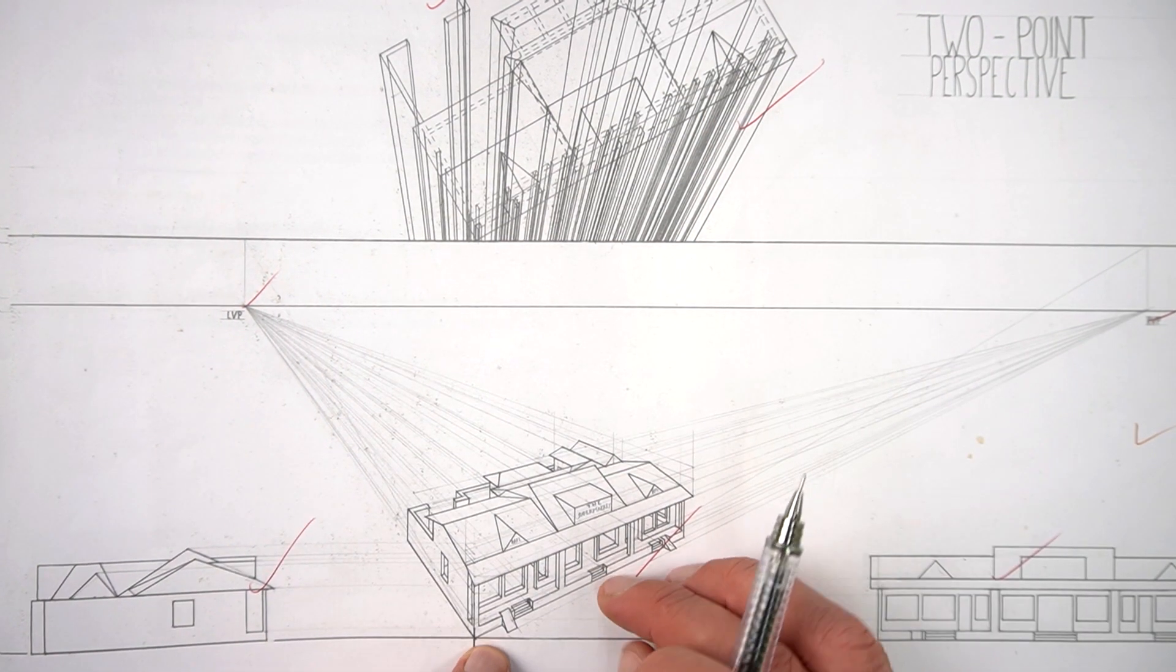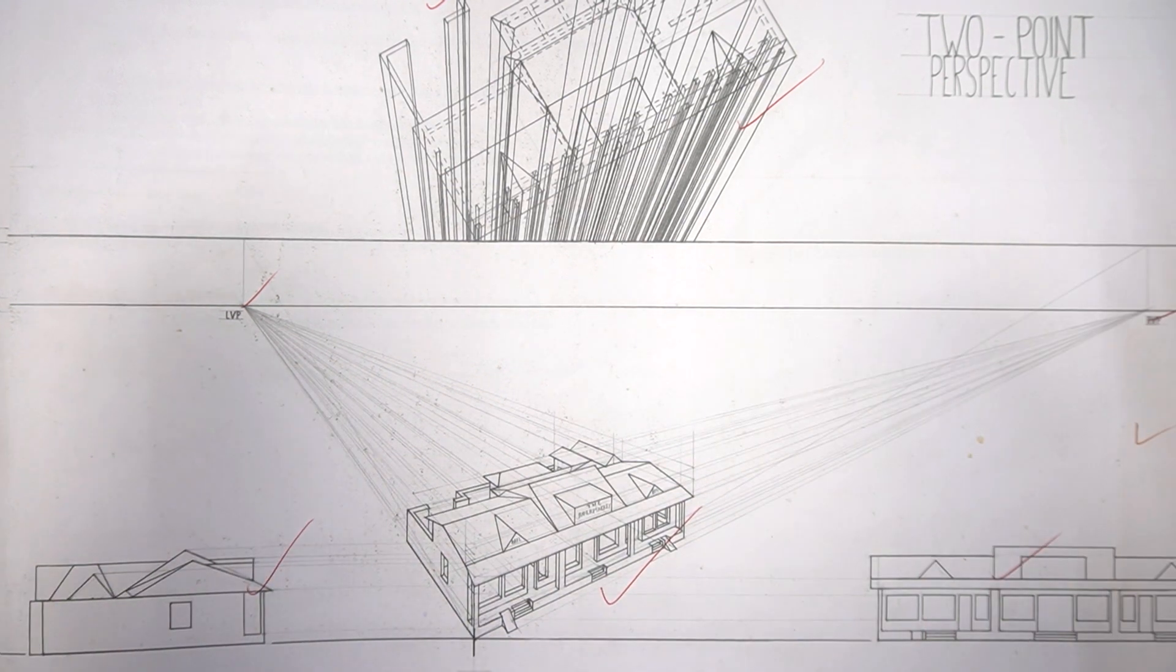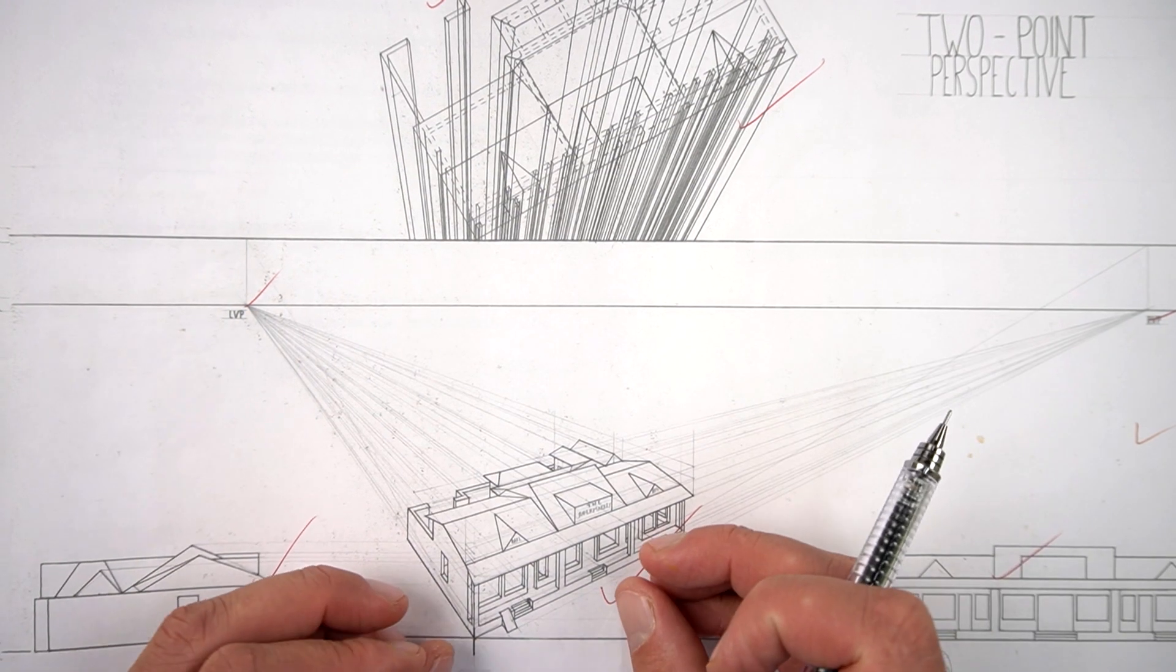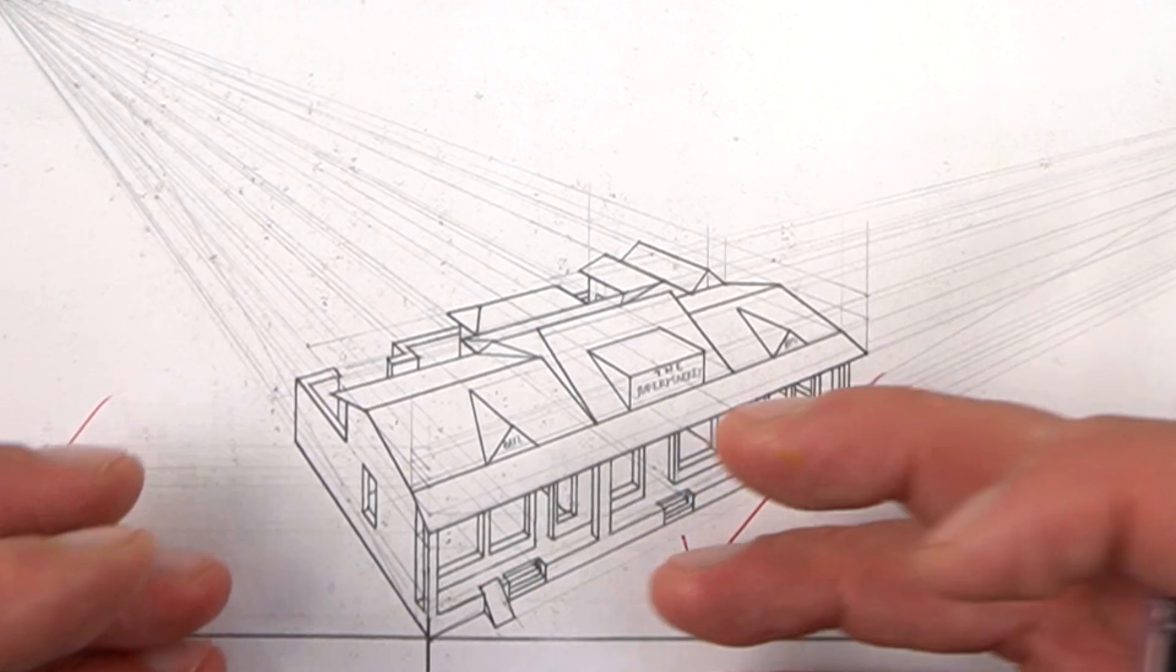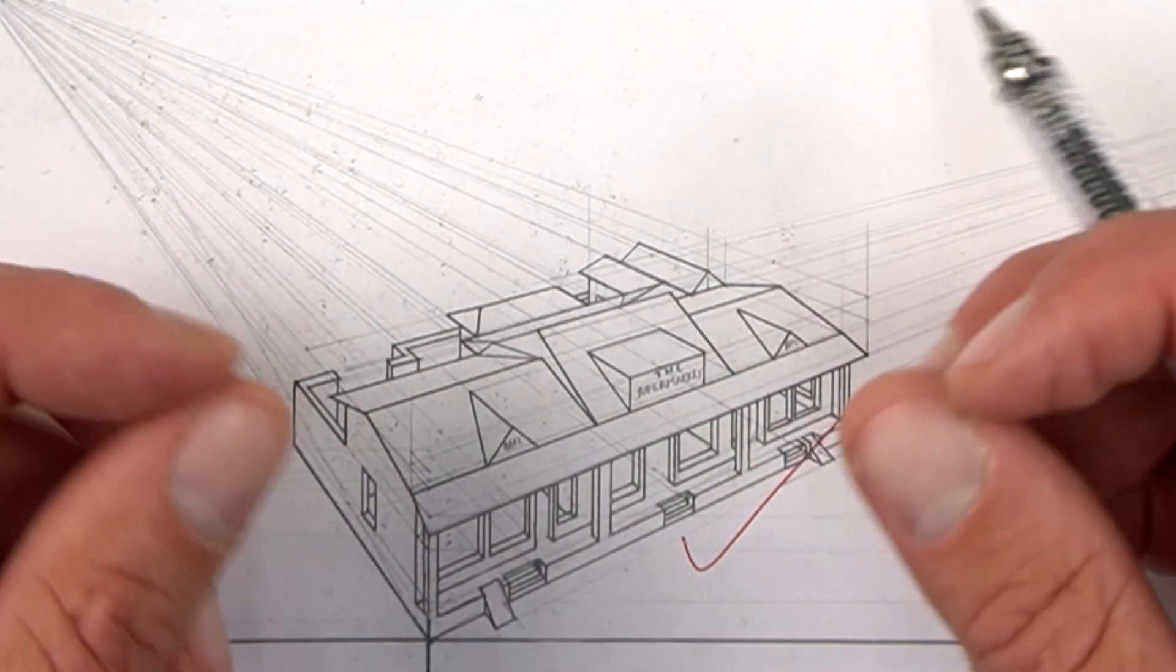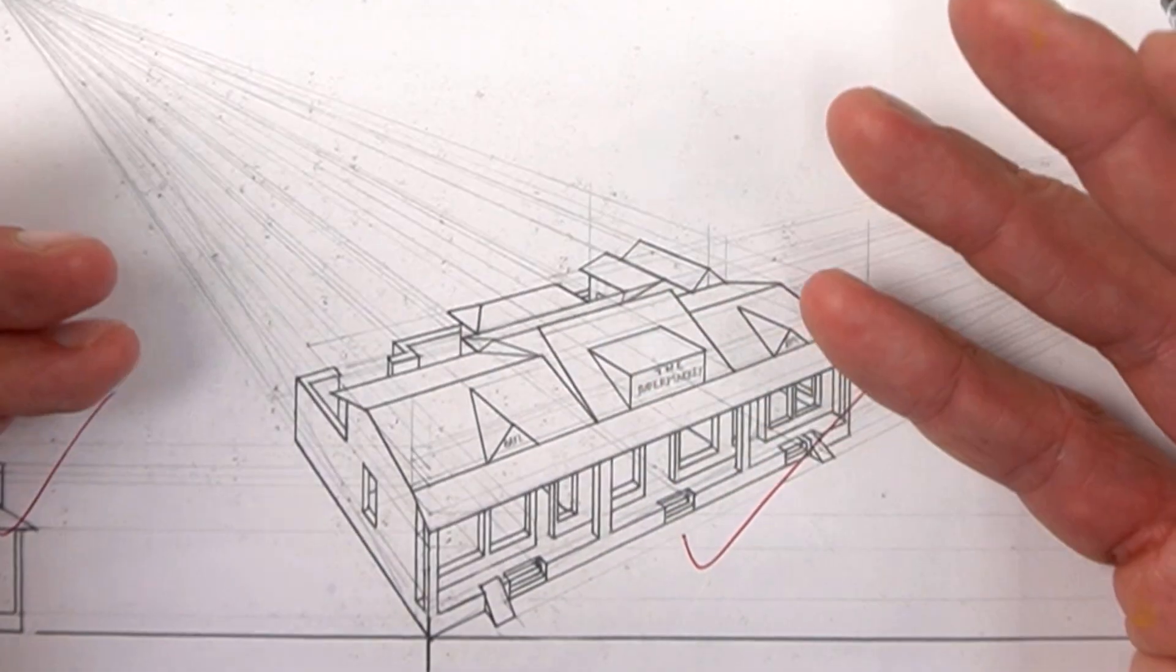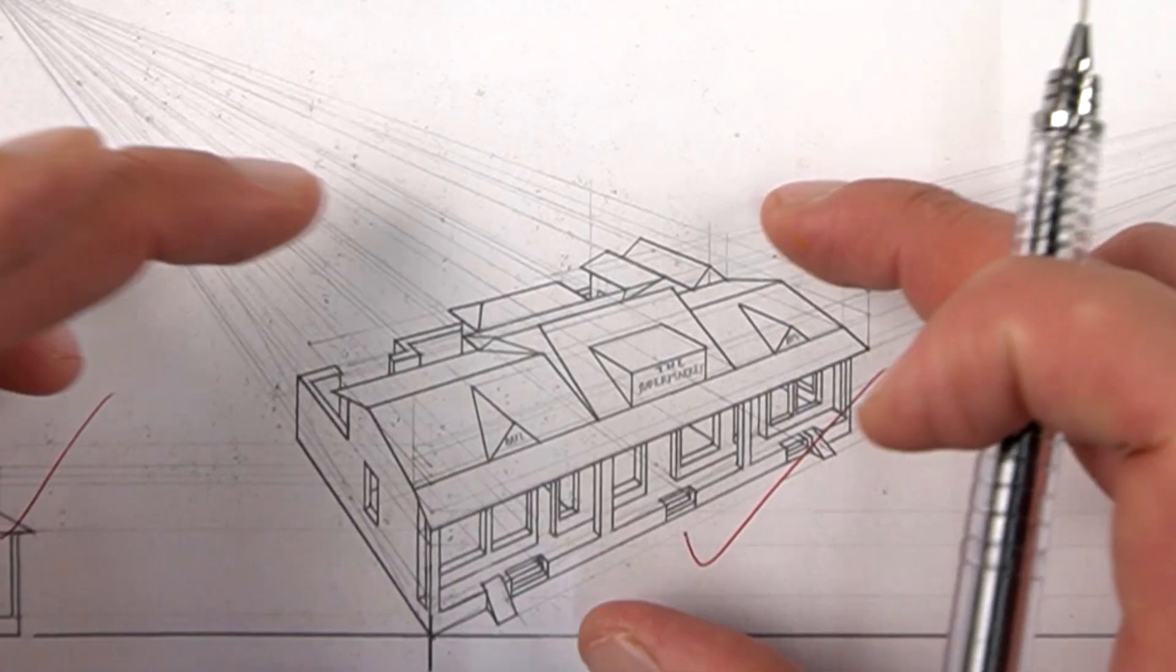I would really encourage you: the details here are of lesser importance. It really is, did you get the construction correct and did you add the main details right? The windows, the roofing, the doors. Don't worry too much about the fascias and the gutters, those small things, the windowsills.